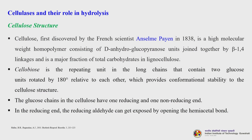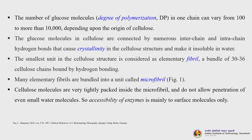Cellulose, first discovered by the French scientist Anselm Payen in 1838, is a high molecular weight homopolymer consisting of dehydroglucopyranose units joined by beta-1,4 linkages and is a major fraction of total carbohydrate in lignocellulose. Cellobiose is the repeating unit containing two glucose units rotated 180 degrees relative to each other, providing conformational stability. The degree of polymerization in one chain can vary from 100 to more than 10,000 depending on the origin of the cellulose. Glucose molecules are connected by inter-chain and intra-chain hydrogen bonds that cause crystallinity and make cellulose insoluble in water.